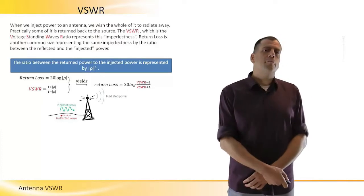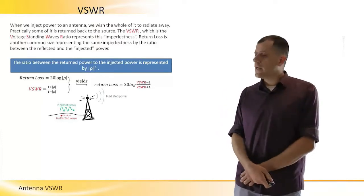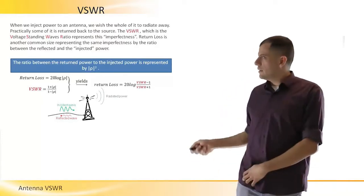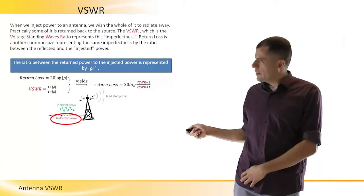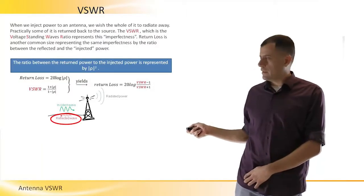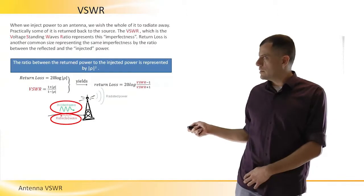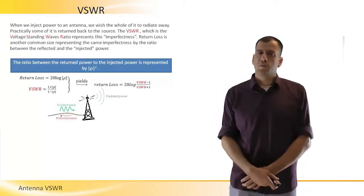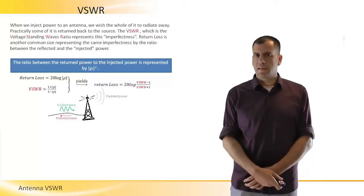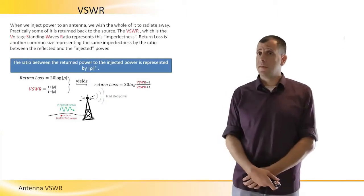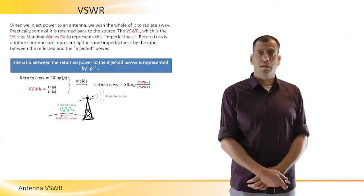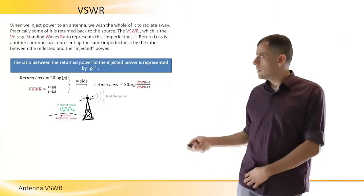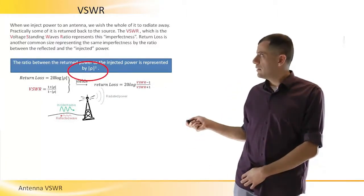And measuring the ratio between the return wave and the incident wave, the one that is marked here in green color, the ratio between them is represented by the symbol rho, the Greek letter rho.